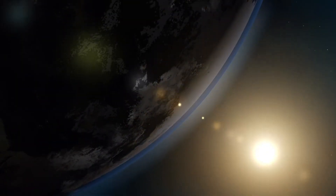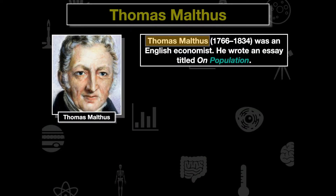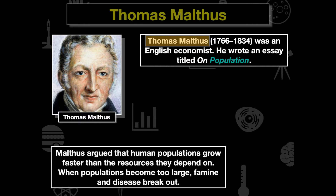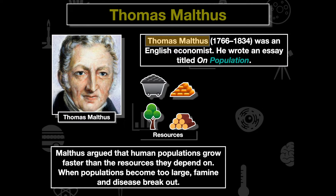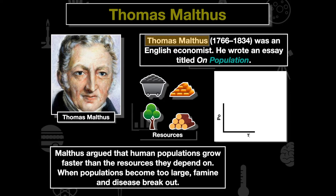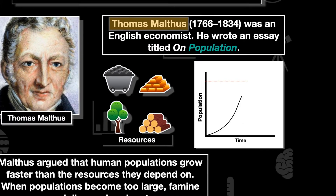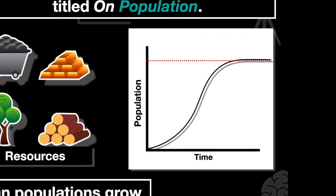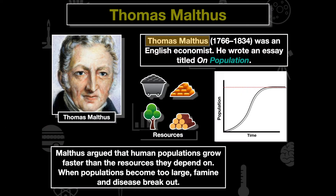This really helps influence and give more evidence to the theory of evolution. Malthus was an English economist who wrote an essay titled On Population. He proposed that human populations grow faster than the resources they depend on, and when populations become too large, famine and disease break out. Graphing population over time, it grows exponentially until resources can no longer support it — this concept of carrying capacity is fundamental to Darwin's thinking about how the environment influences evolution within a species.